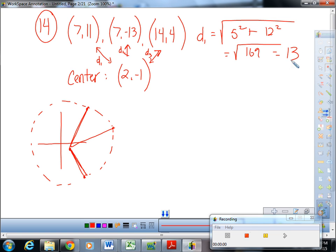So we're looking for all these distances to be 13. D2 is the square root of 5 squared plus negative 13 minus 1 is negative, minus a negative 1 is indeed negative 12 squared. And that's also going to be 13. Because remember, negative 12 squared is positive 144.